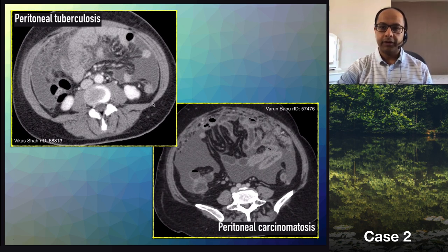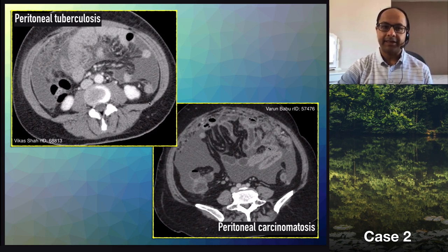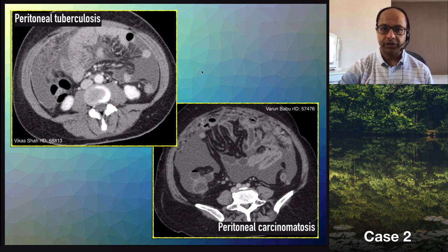There is nothing definitive on the CT that will point you to one or the other. We're going to look at different cases to make sure we understand all the different appearances of peritoneal tuberculosis and consider it as a differential when we see this kind of appearance. The similar features in both cases include a very large volume of ascites throughout the abdominal cavity with an enhancing margin indicating peritoneal inflammation, omental thickening and nodularity, and mesenteric thickening and nodularity.